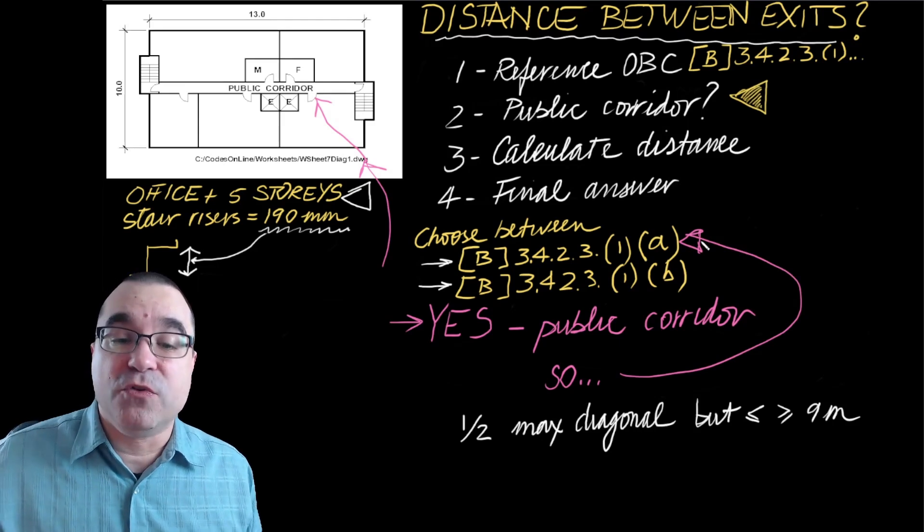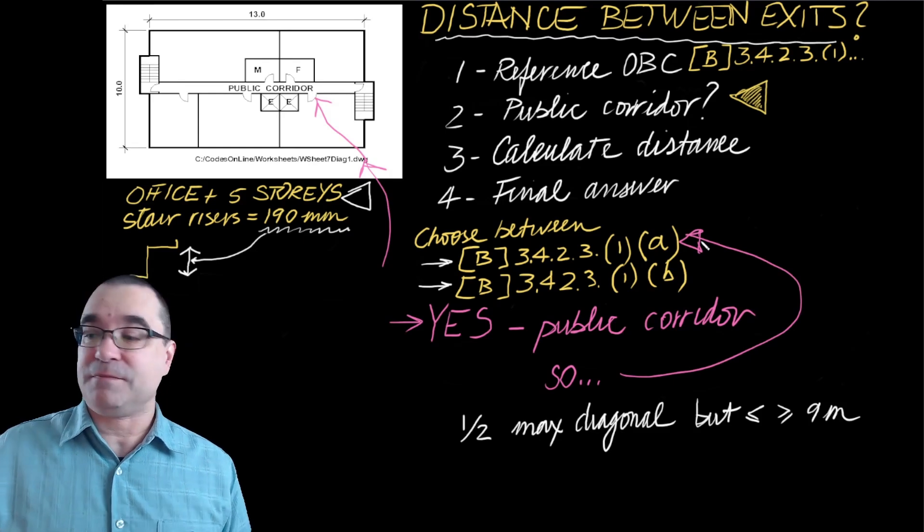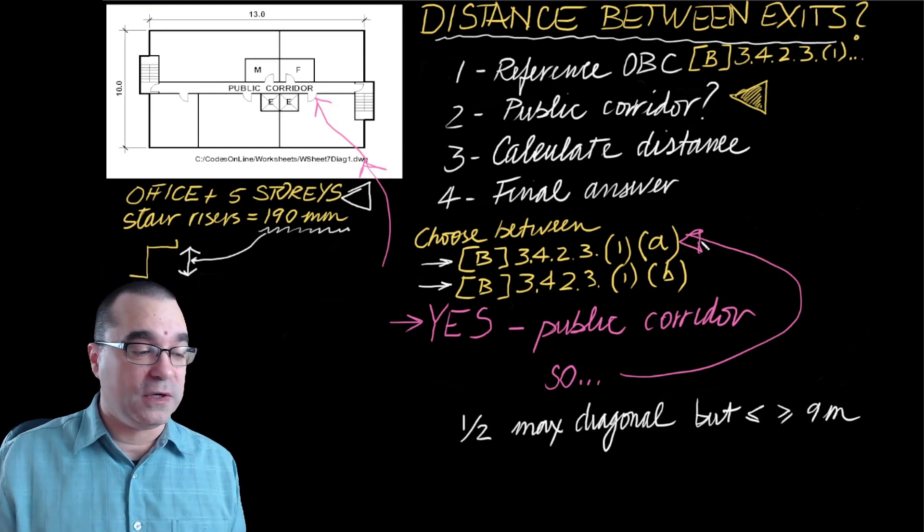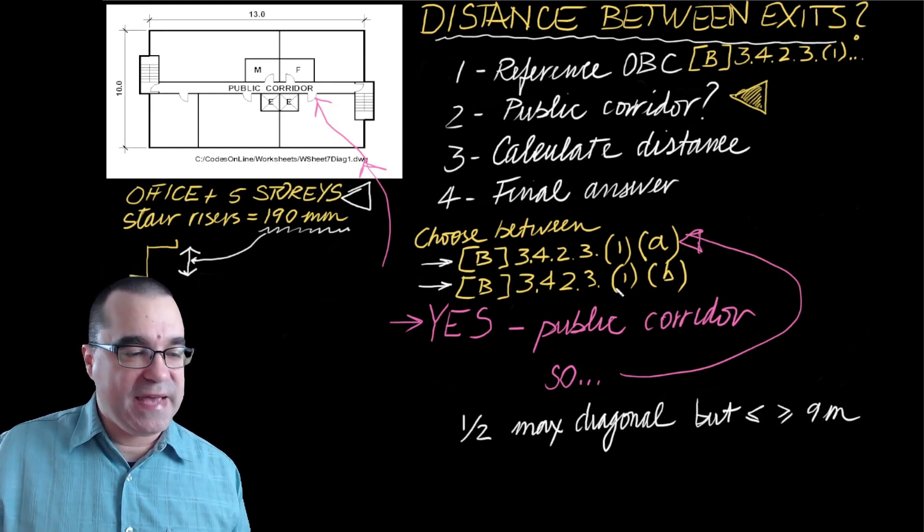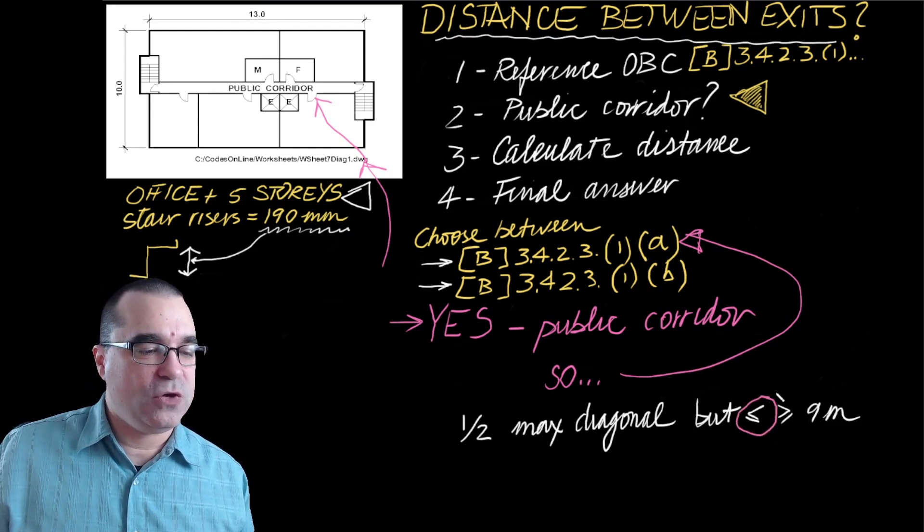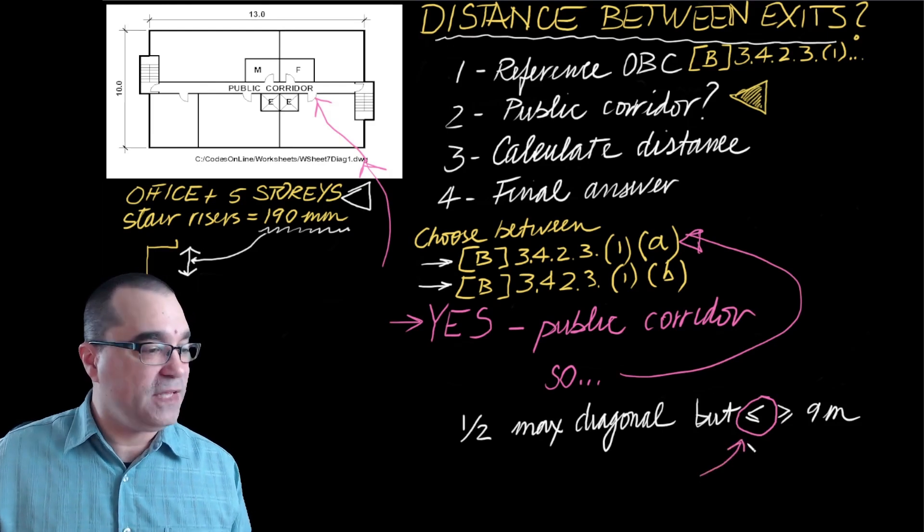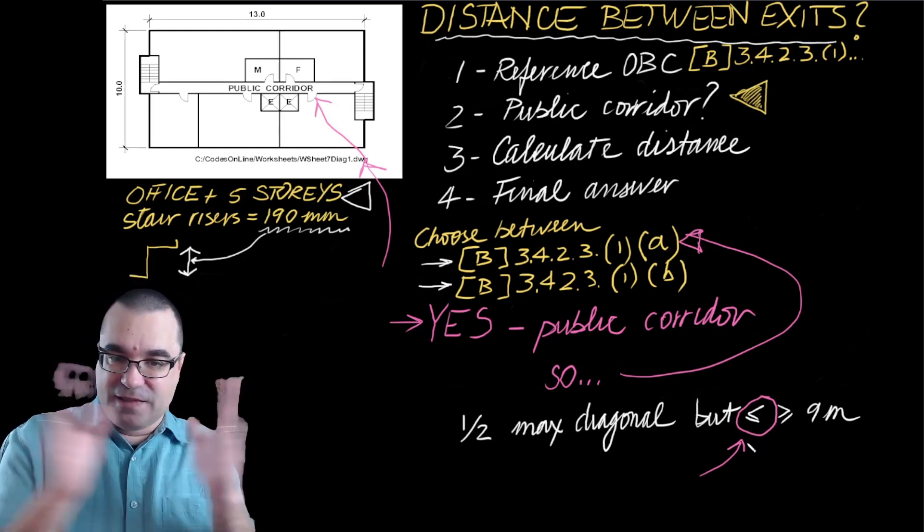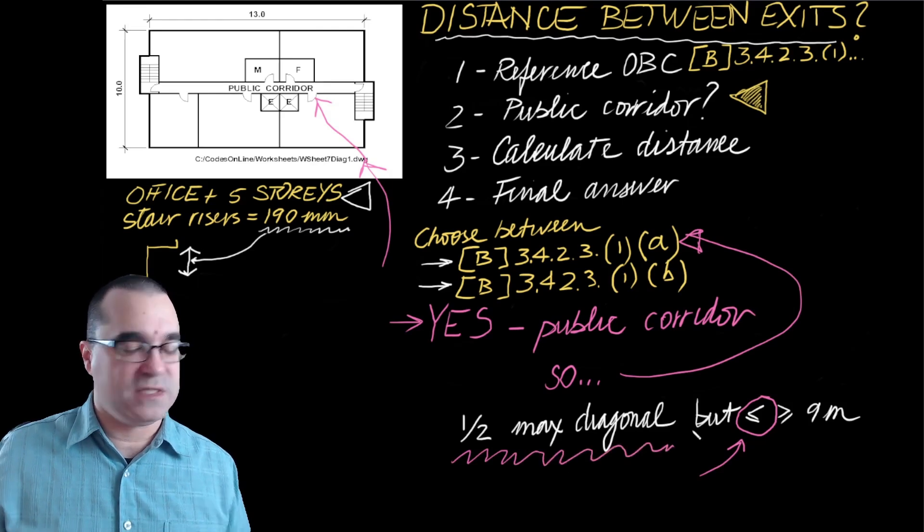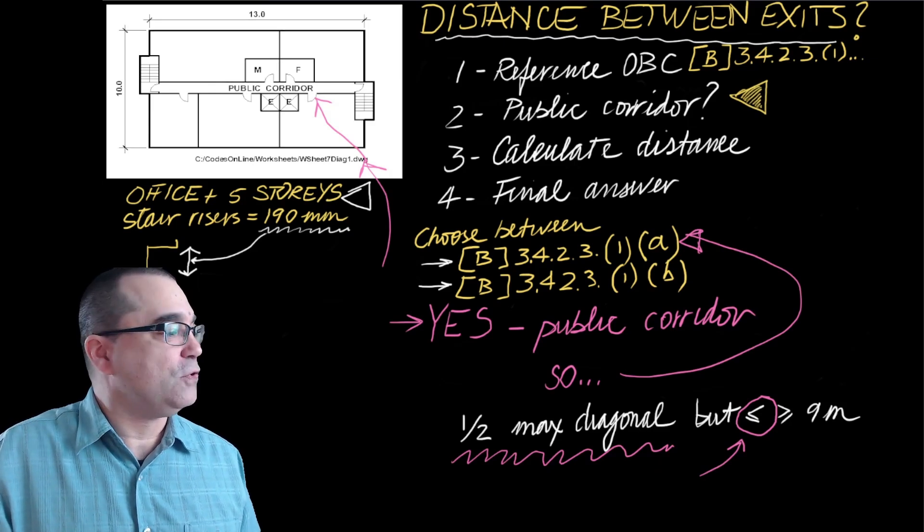That is 3.4.2.3(1)(a) under Division B of the Ontario Building Code. Because there is a public corridor, the maximum distance between exits has to be less than or equal to nine meters. That distance is calculated as half of the maximum diagonal of this floor plan. So that brings us to step number three.